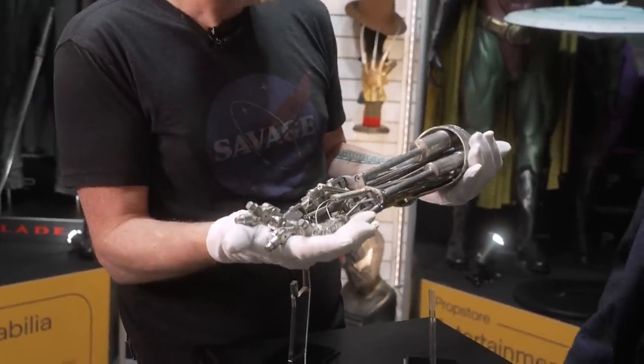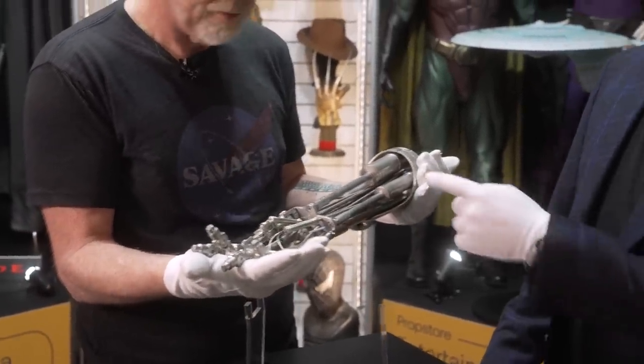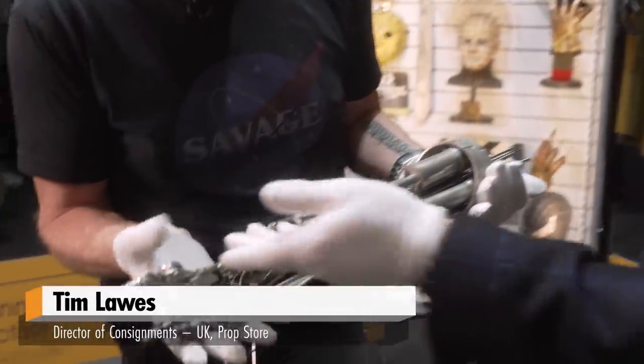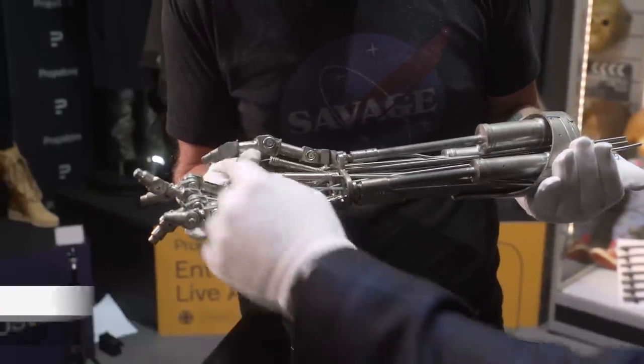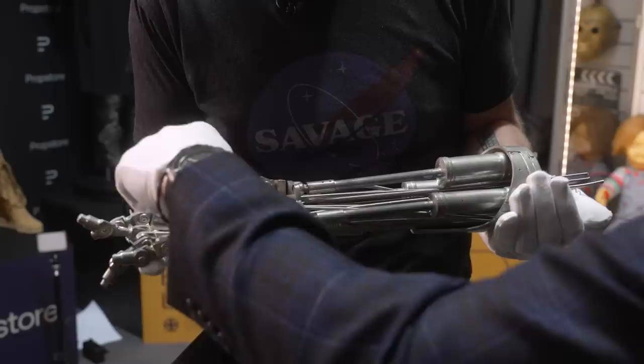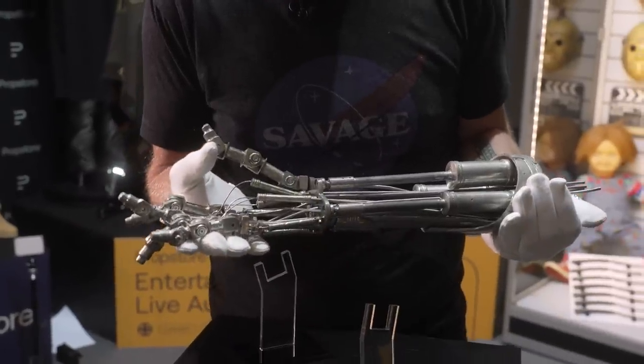This is one of the practical filming props. This has got cable controls in it. As you can see, it's all wired to actually pull down and roll those fingers around. Oh my gosh, probably needs a little bit of adjustment, but you can see all the mechanics are there.